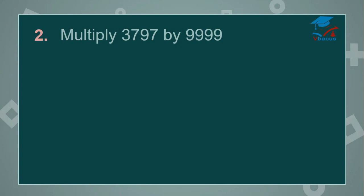Let us go for the next sum: 3,797 by 9999. Here also multiplicand and multiplier are having four digits. There is a thumb rule — how many digits are there in the multiplicand? 4. How many digits are there in the multiplier? 4. And the total number of digits in the product should be either 7 digits or 8 digits.